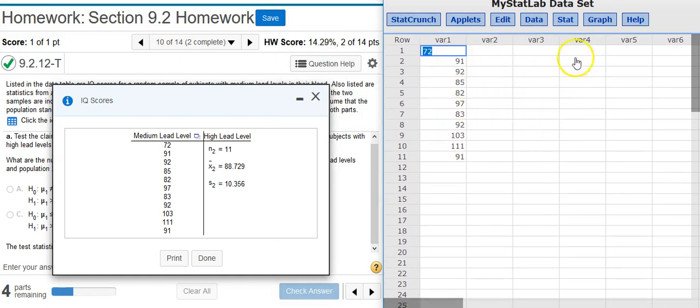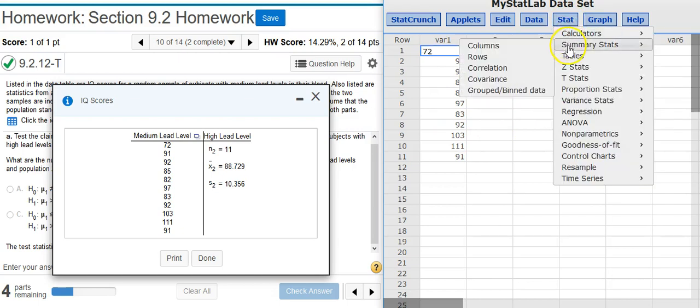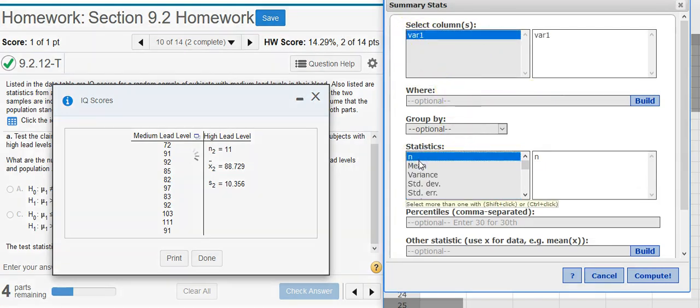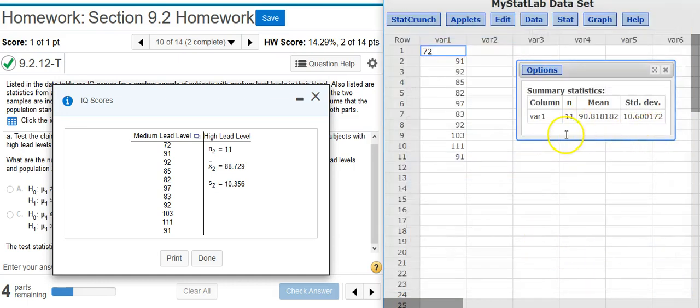And I'm going to resize this window so we can see better everything that's going on. Now here in StatCrunch, I'm going to get my summary stats by going to Stat, Summary Stats, Columns. I select that column of data. I want to calculate the sample size, sample mean, and the sample standard deviation. And here's my numbers right here.